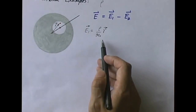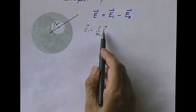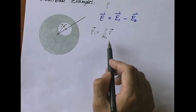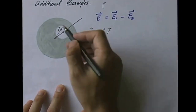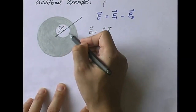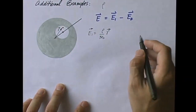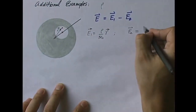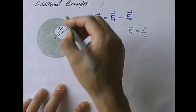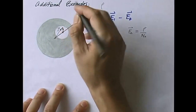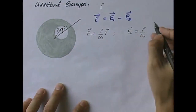Now what about E2? E2 is the electric field produced by a smaller sphere of the same charge density rho. We have to subtract E2 because this sphere does not really exist — there is no charge there. E2 equals rho over 3 epsilon-naught times the vector R-prime, where R-prime is from the center of the cavity to that point.